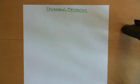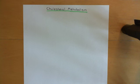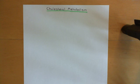We'll then talk about the movement of cholesterol from the intestine to the liver — the exogenous pathway — and then how the liver can put cholesterol into the blood through the endogenous pathway. Finally, we'll discuss hypercholesterolemia, how it can lead to atherosclerosis, and we'll end by discussing anti-atherosclerotic drugs.